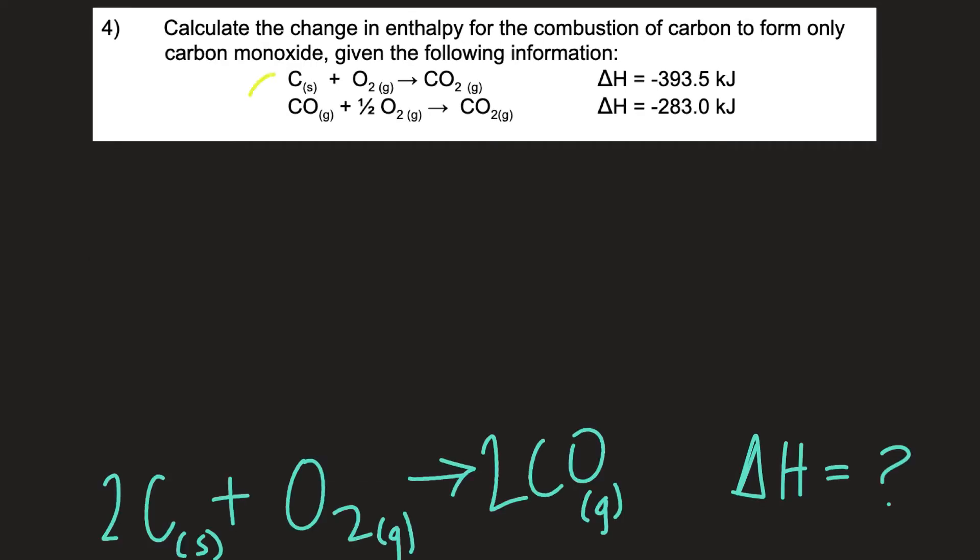So now we're going to take our puzzle pieces and we are going to manipulate them so that they add up to this overall equation down here at the bottom. There are multiple ways to do this just like when you're putting together a puzzle. But I'm going to just focus on my product in my overall equation which is carbon monoxide. So I only see carbon monoxide in one spot. So I'm going to start there.